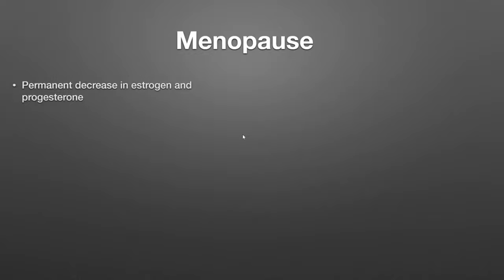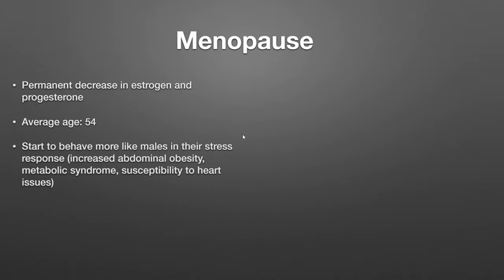There is also that thing called menopause. When that happens, you're going to have that permanent decrease in estrogen and progesterone — usually around age 54, which is where that 40-to-50 number comes in. What's going to happen is females will start to behave more like males in their stress response — weight gain, metabolic syndrome, heart issues. When my mom went through menopause, one of the things that happened is she started snoring. That's because she started behaving more and more in the stress response like a male — that's why a lot of guys start snoring in their 30s, and women will probably start snoring post-menopause. We'll talk all about airway next time.